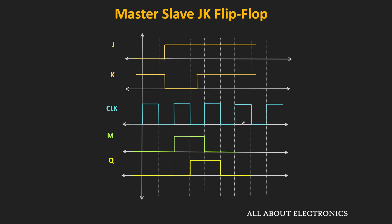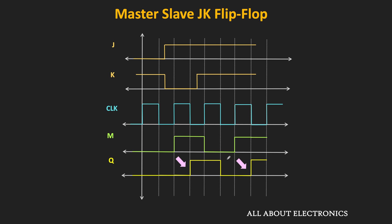In the next clock cycle with J=K=1, both inputs are 1 again, and the master output toggles once more to 1. Once the clock becomes low, the slave follows the master. Both master and slave latches are never active at the same time, and that is what prevents the race-around condition.